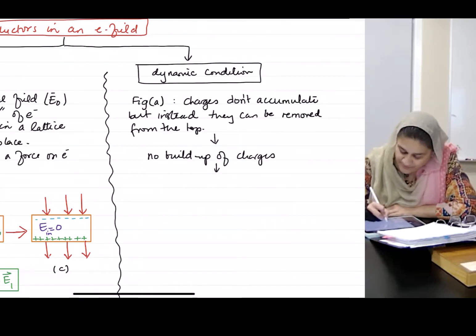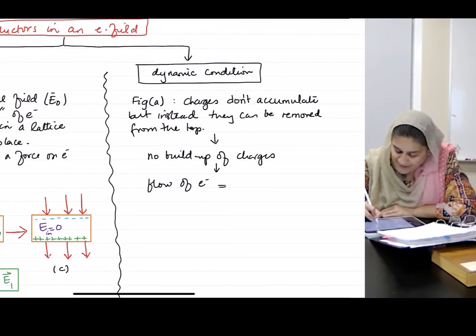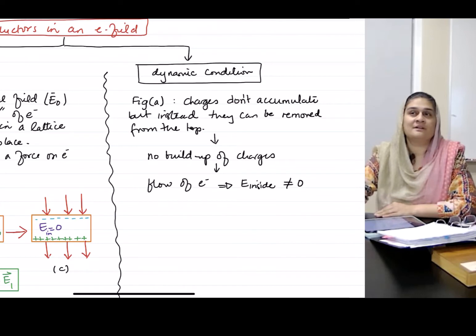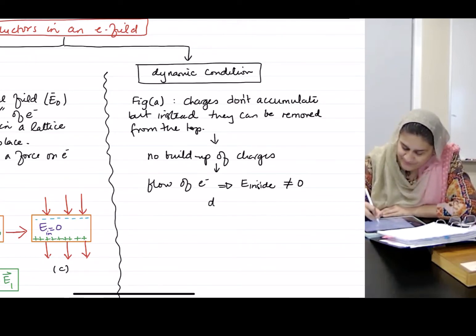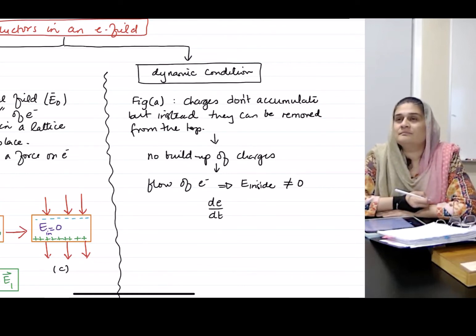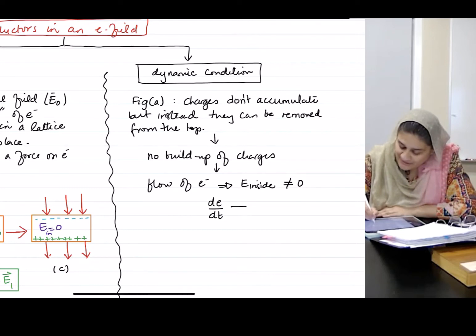Instead, there is a flow of electrons, which implies E inside will not be zero anymore. The rate at which the electrons are being removed can be written as that or generally as that,